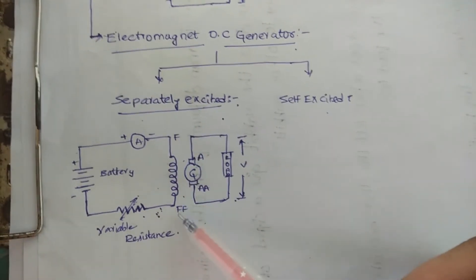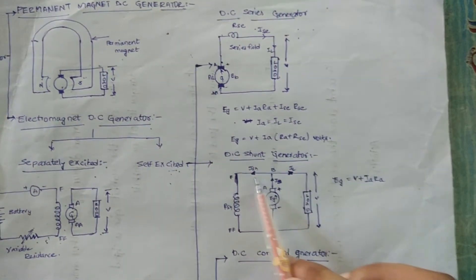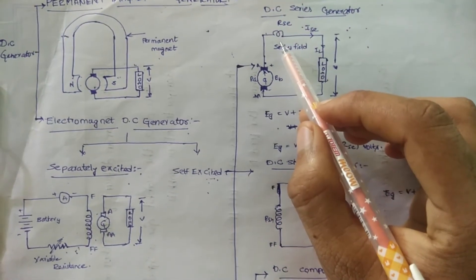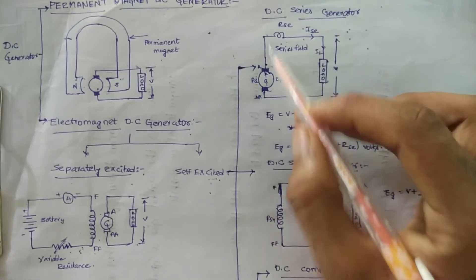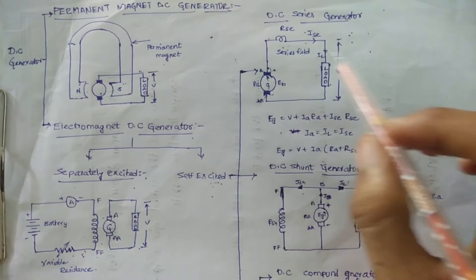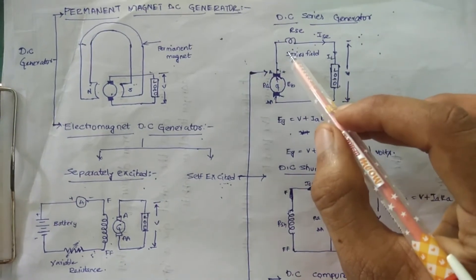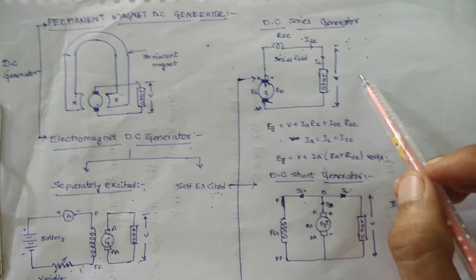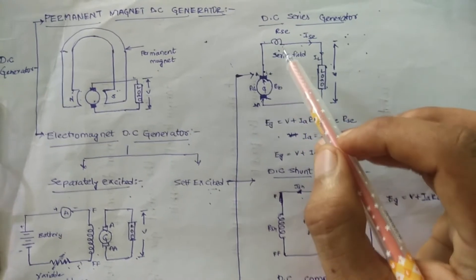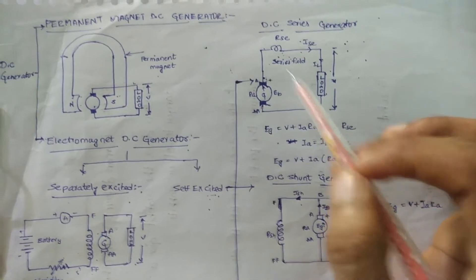The self-excited generator is classified into three categories: DC series generator, DC shunt generator, and DC compound generator. In the DC series generator, the field winding is connected in series with the armature, as shown in the figure. The field current flows through the armature and the series winding. Since the series field winding carries full load current, it is designed with a few turns of thick wire.